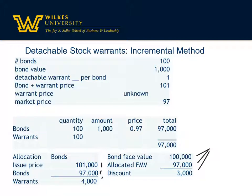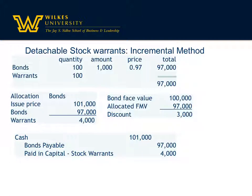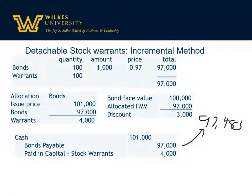Our journal entry shows all of these items. We're receiving $101,000 in cash. We're crediting bonds payable for $97,000 and crediting paid-in capital — stock warrants for $4,000. The accounts are exactly the same under the proportional method as the incremental method; it's the amounts that are different. The effective interest amortization table will also differ: under the proportional method we amortize $97,483 up to $100,000, while under the incremental method we amortize $97,000 up to $100,000. But the end result is the same — bonds payable at the end of the life is $100,000.